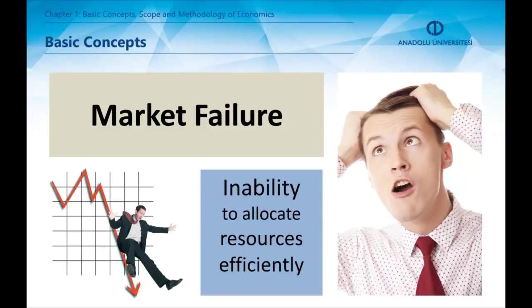Because markets are the places where resource allocation happens, a failure in them causes an economy to work inefficiently, resulting in non-optimal resource allocation. Some types of market failures include lack of knowledge, externalities, and interventions.